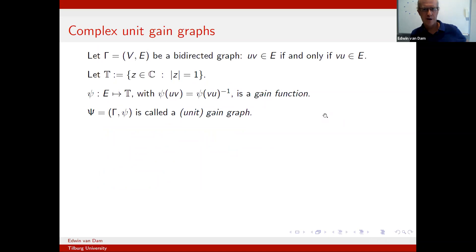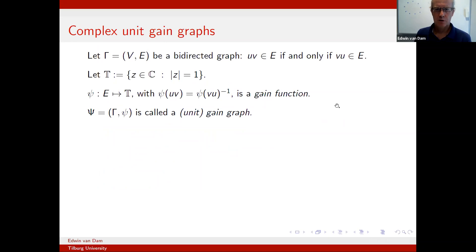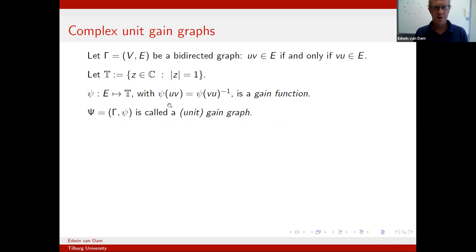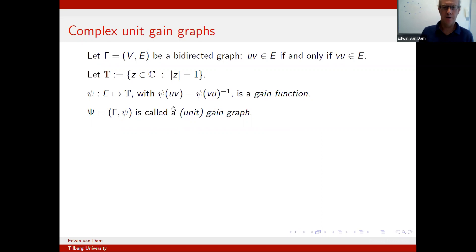Complex unit gain graphs, or gain graphs for short: we have a graph with a set of vertices and edges. These edges are ordered pairs, and the assumption is that if there's an ordered pair uv then there's also the reverse ordered pair. There's a gain on such pairs — the psi here — and if you go in the other direction of the edge you have the inverse of that psi. This psi is on the unit complex circle. With usual graphs and the adjacency matrix, all the gains are just one, so this is a generalization.